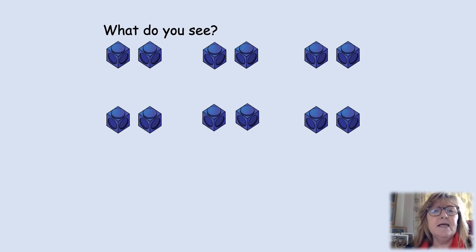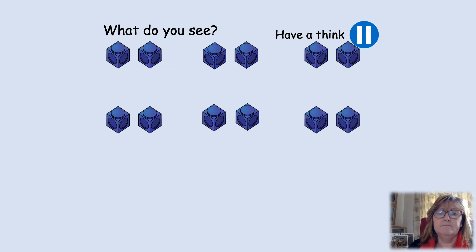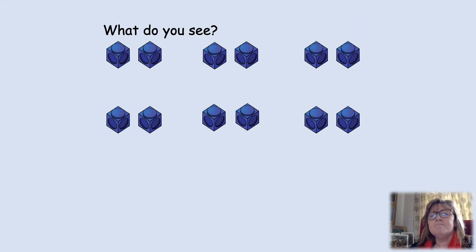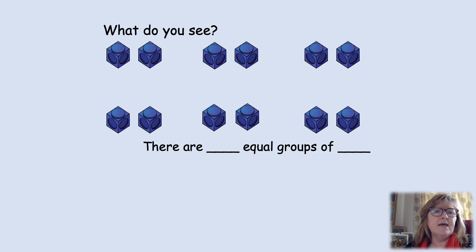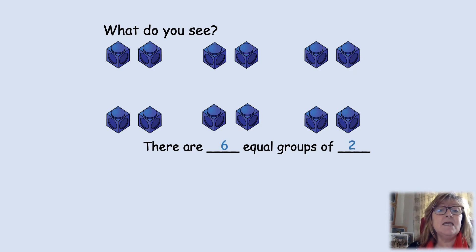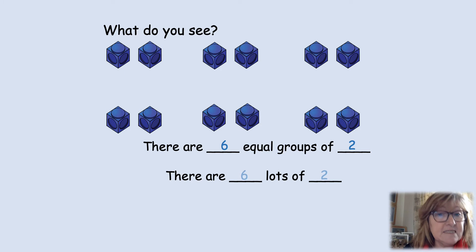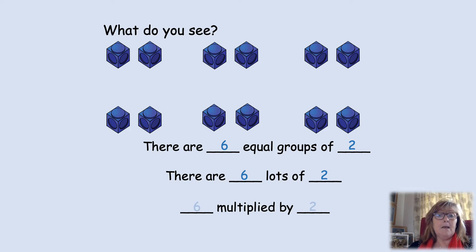What do you see now? Have a think — pause the video. The groups have changed, haven't they? And the amount in the groups has changed. How many groups are there now? There are six groups. Are they all equal? Yes. So, there are six equal groups of two. There are six lots of two. So, what will my multiplied by be? Six multiplied by two. Six times two. Well done.